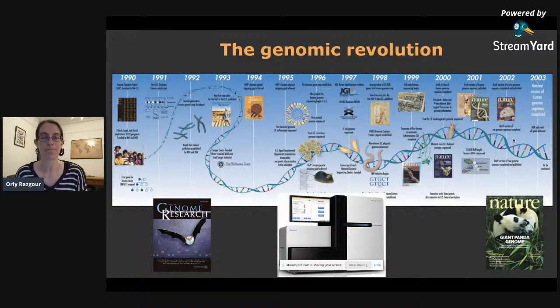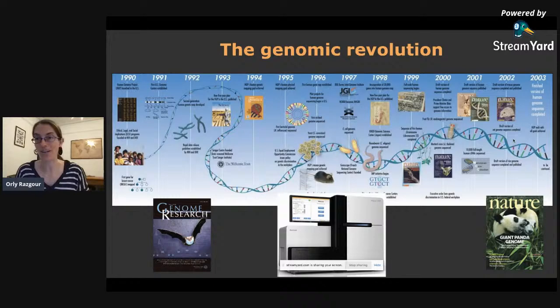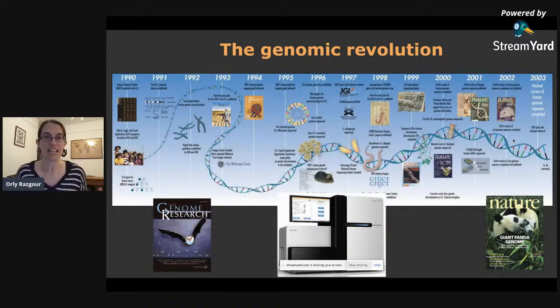The human genome project was the feat of biological sciences. The whole human genome was sequenced and assembled by 2003 — this process took about 13 years, involved over 20 institutions across six countries, and cost well more than two billion dollars. Now if I wanted to sequence the human genome today it would take around 24 hours and cost around a thousand dollars. This is a massive difference.